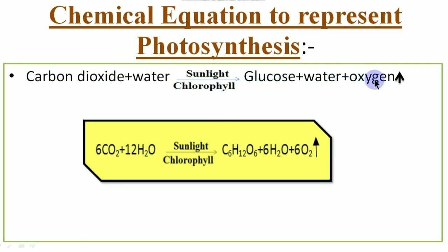So six molecules of carbon dioxide combines with 12 molecules of water in presence of sunlight and chlorophyll. One molecule of glucose, six molecules of water and six molecules of oxygen are produced. This upward arrow mark indicates the form of oxygen after the formation of oxygen it is released to the atmosphere as a by-product.